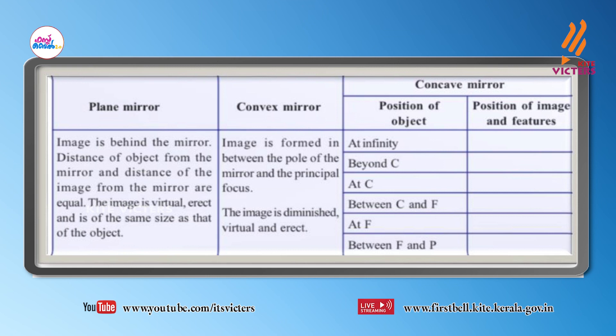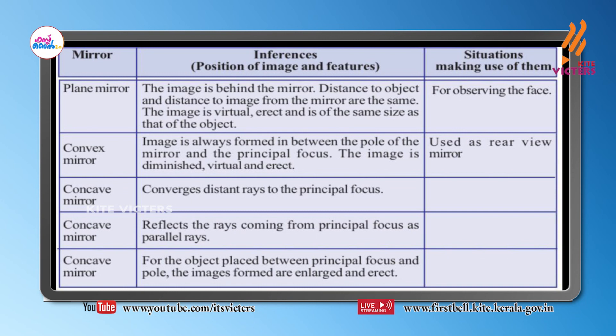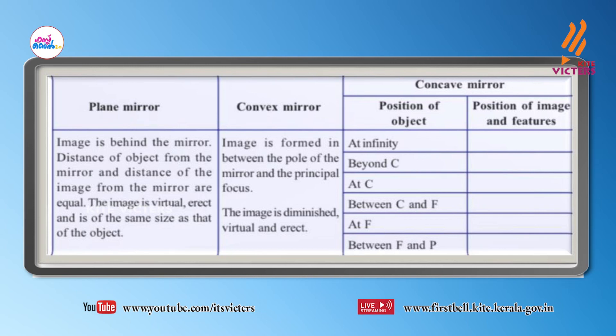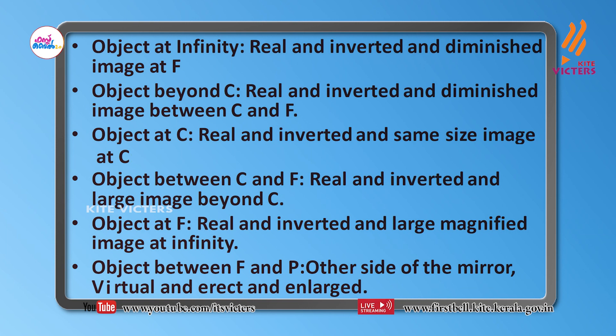You need to write the position of the images and their features for each case. By completing and analyzing this table, we can get some inferences. The first column lists the three types of mirrors — plane mirror, convex mirror, and concave mirror. The second column records the inferences obtained from analyzing the table regarding the nature of the image.